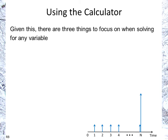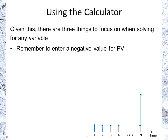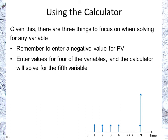Three things to focus on when solving for any of the five variables. First, you have to remember to enter a negative value for the present value — for the price. That's just how the calculator works. The payments and future value are positive, so keep that in mind so your calculations are correct. Second, you enter values for four of the variables and the calculator solves the fifth. I always try to enter a value even for variables with a presumed standard value — for example, the future value is often 1,000, but it's good to enter it explicitly so the calculator doesn't have a wrong number stored.